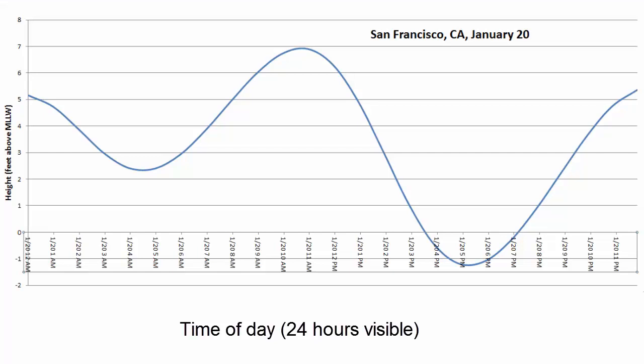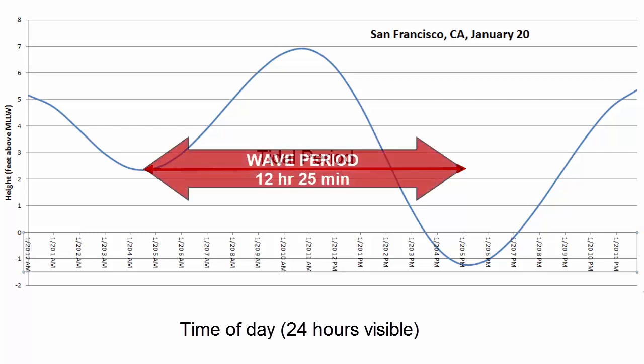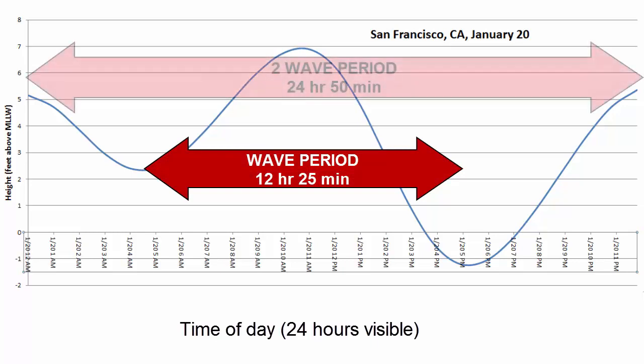Let's continue to apply wave terminology from the waves tutorial to the particulars of a tidal wave. Remember that the period of a wave is the time it takes for one complete wavelength to move past a point, and wavelength is the distance from crest to crest or trough to trough. So the period of one tidal wave is about 12 hours and 25 minutes, and two complete waves — crest to crest and back to crest again — occur every 24 hours and 50 minutes.